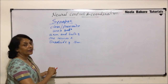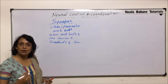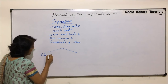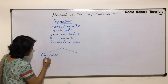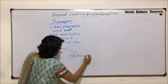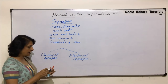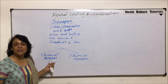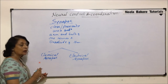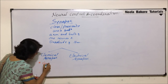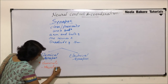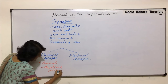Depending upon that space and how conduction is going to take place across the two neurons, we classify synapses into two categories: one is called chemical synapse and the other is known as electrical synapse. In a chemical synapse, conduction from one neuron to the other through the synapse takes place with the help of secretion of a chemical.